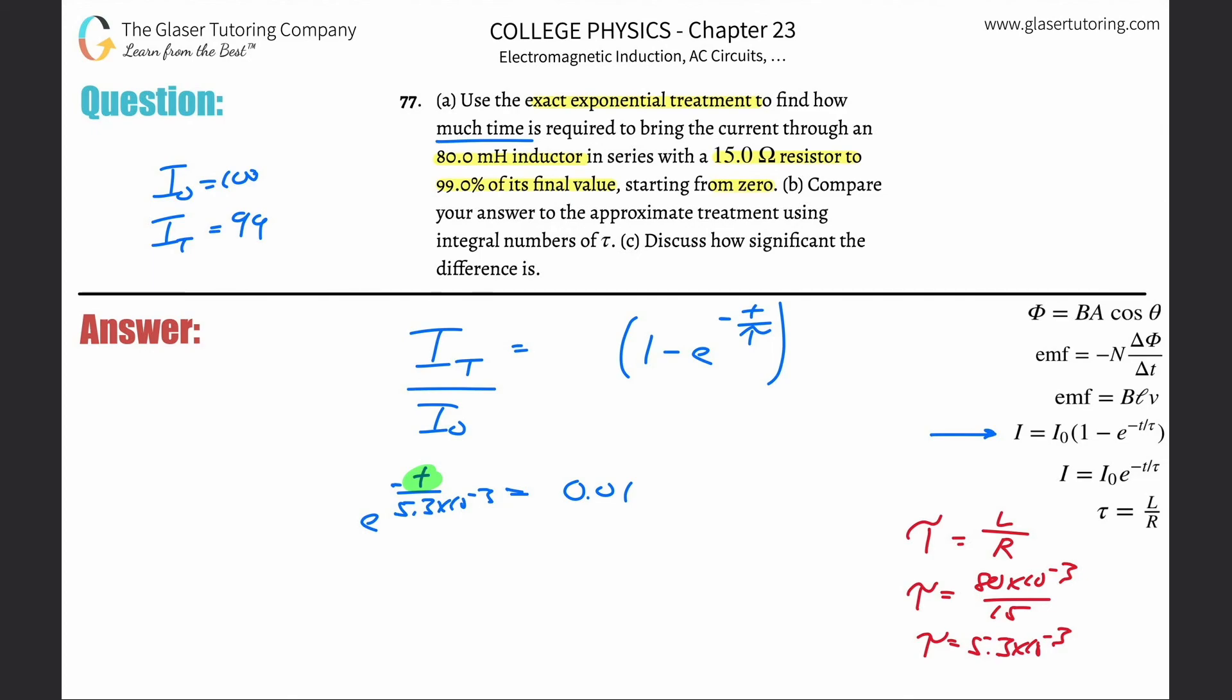Now this is the part where the other problem will come in handy. We have to take the natural log of both sides to get rid of the e. We've seen that before. The natural log of this side, the natural log of this, so this is going to work out to be negative t over 5.3 repeating times 10 to the minus 3, and we plug in ln of 0.01.